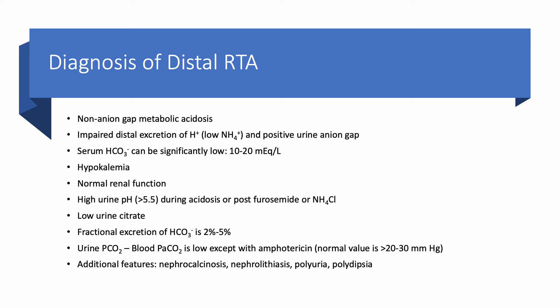How do we make the diagnosis? First, establish a diagnosis of non-anion gap metabolic acidosis. This acidosis is due to impaired distal excretion of hydrogen, so by definition ammonium is low — if you can measure it, it would be low. Therefore, the urine anion gap is positive. In proximal RTA it is negative; here it is positive. Serum bicarbonate is usually lower than in proximal RTA — it can be as low as 10 to 20 mEq/L, whereas in proximal it is around 16 to 20.